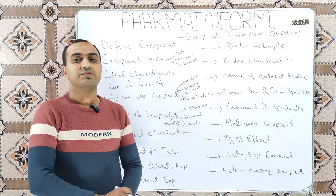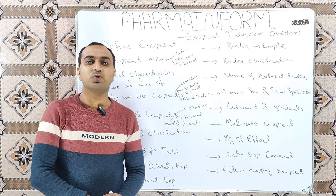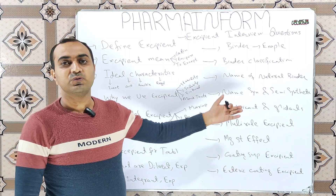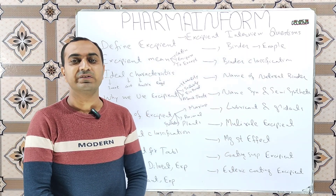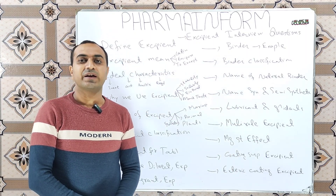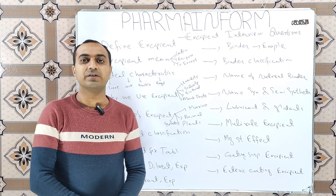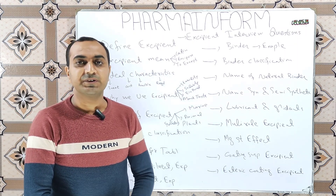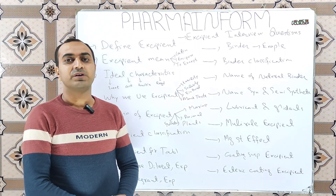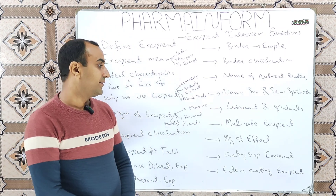The next question is: give the name of an excipient which has a multi-role. The most commonly used excipient with a multi-role is starch. It is used as a diluent, it is also used as a binder, it is used as a disintegrant, and in some quantities it is also used as a glidant.